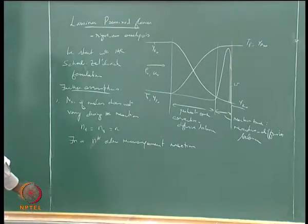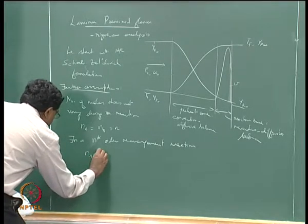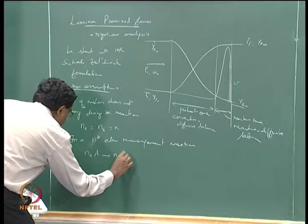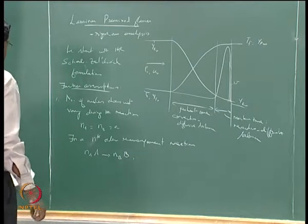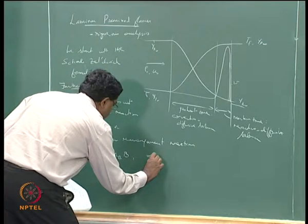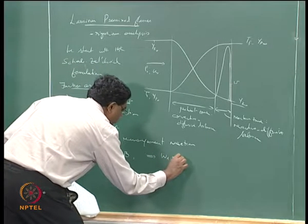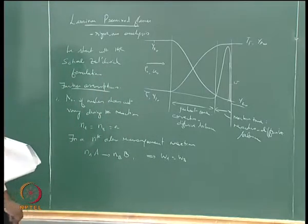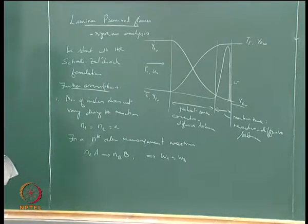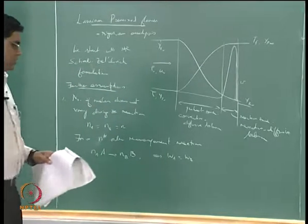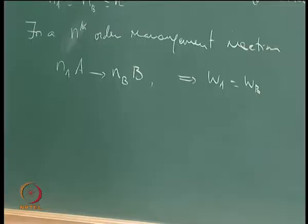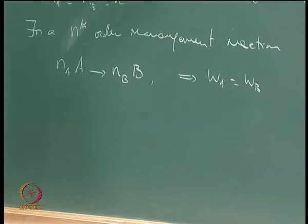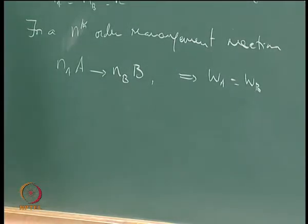Suppose we have N_A equals N_B, corresponding to an N-th order rearrangement reaction such as N_A → N_B B. When N_A equals N_B, this implies W_A equals W_B, so the mass fractions and mole fractions are equal, and we do not have to worry about a further equation relating mass fractions and mole fractions.